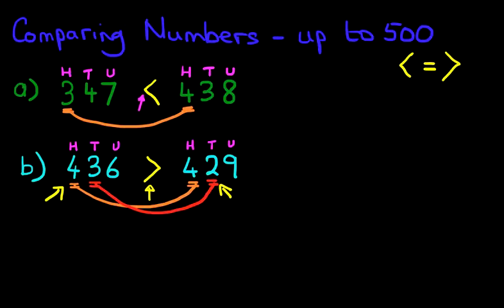Now, let's have a look at one final example. Suppose we have the numbers 247 and the other number is 249. 247 and 249.